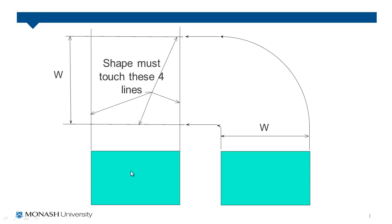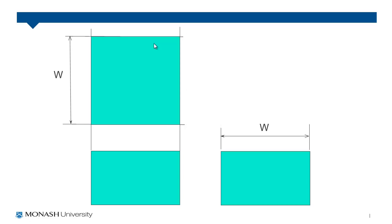Now we also know from these two views that whatever shape is up here must touch these four lines here. So what might this top view actually be? It could be a square which means we have a rectangular prism, which is probably what most of you would have put down.